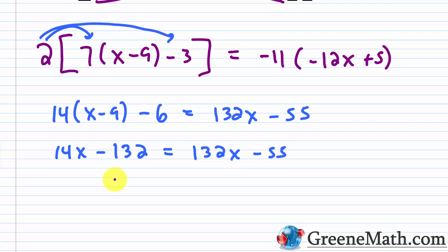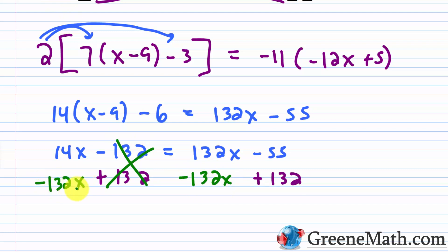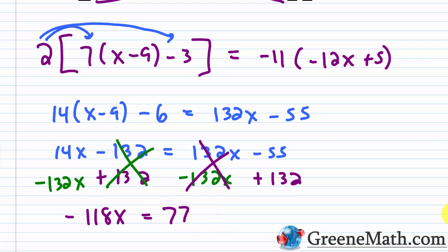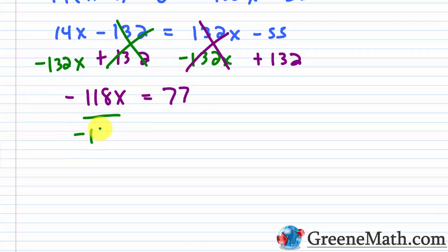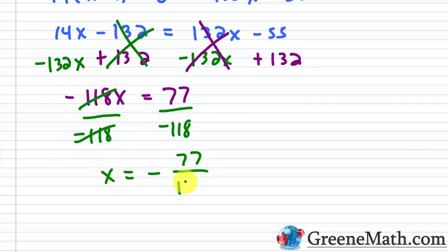Adding 132 to each side and subtracting 132x from each side: 14x - 132x is -118x, and -55 + 132 is 77. Dividing both sides by -118: x = -77/118. Checking if it simplifies: 77 = 7×11, and 118 is not divisible by 7 or 11, so x = -77/118 is fully simplified.